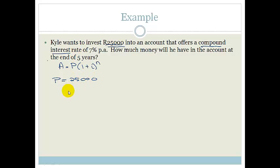The interest rate is 7% per annum. So 7 over 100 to get it in decimal, which is 0.07.